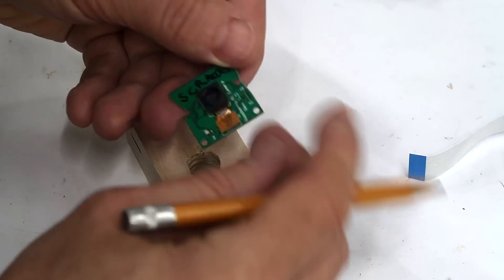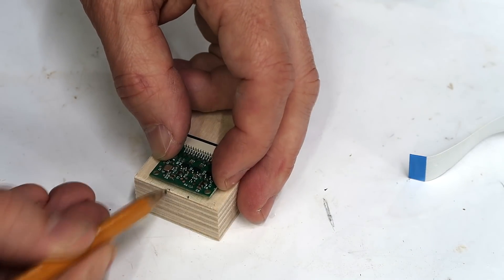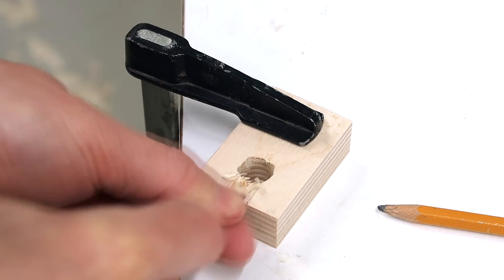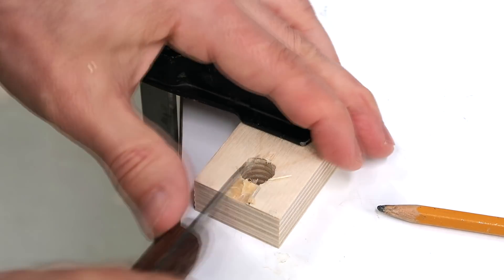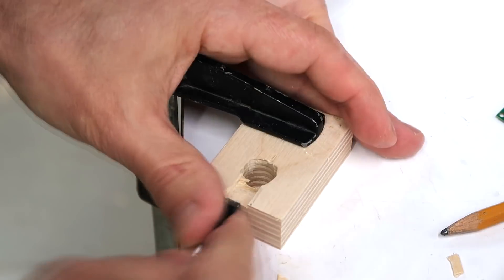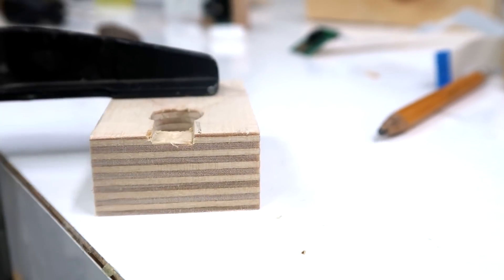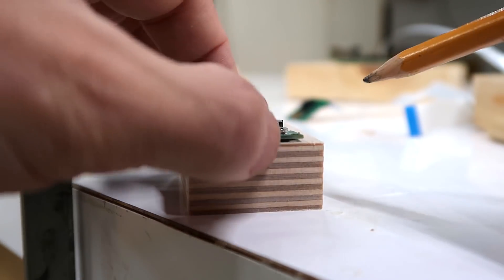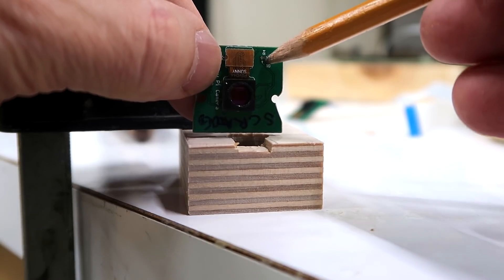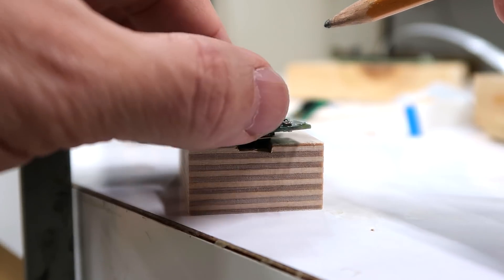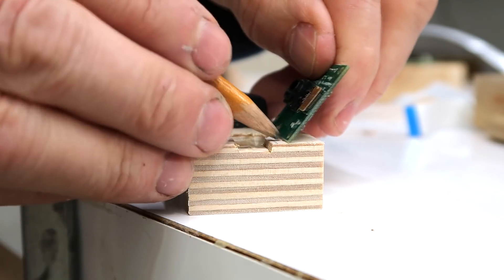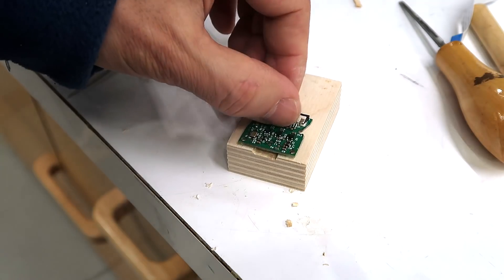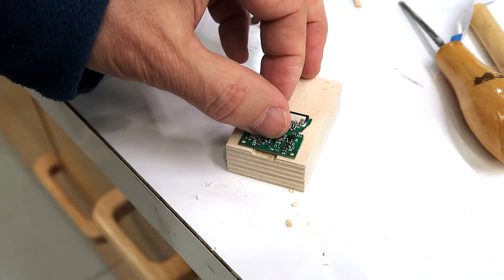Now I just need to make room for this connector and that bit there. So this now fits on here almost flat except for these components right here so I have to make another indentation to accommodate those. That now fits on perfectly flush.